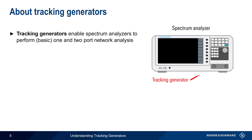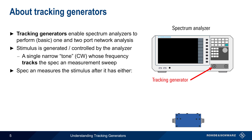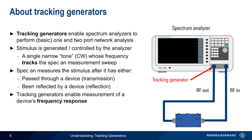A tracking generator enables a spectrum analyzer to perform basic one- and two-port network analysis. Similar to a VNA, the stimulus signal is generated and/or controlled by the analyzer. This stimulus is a single narrow tone, or CW signal, whose frequency tracks the spectrum analyzer measurement sweep. The analyzer measures the amplitude, or magnitude, of the stimulus signal after it has either passed through a device or been reflected by a device. Another way of saying this is that a tracking generator enables measurement of a device's frequency response — that is, how much power is transmitted through or reflected by the device as a function of frequency.